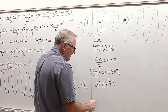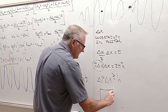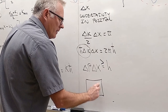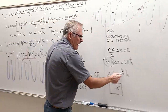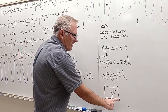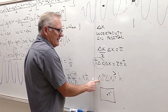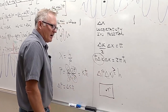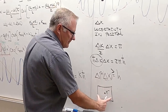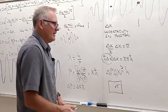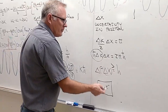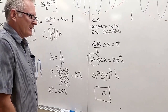The more you try to pin down position, the less you know momentum, and vice versa. For example, an electron confined in a box has a known position uncertainty Δx equal to the box size. If the momentum were exactly zero, Δp would be zero, making Δp·Δx = 0 < h — a violation. So an electron can never just sit still in a box. That's impossible.